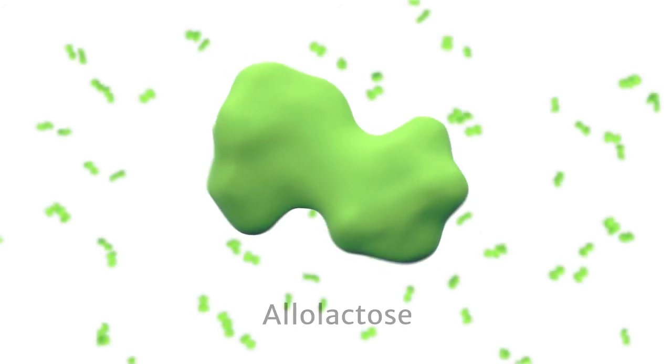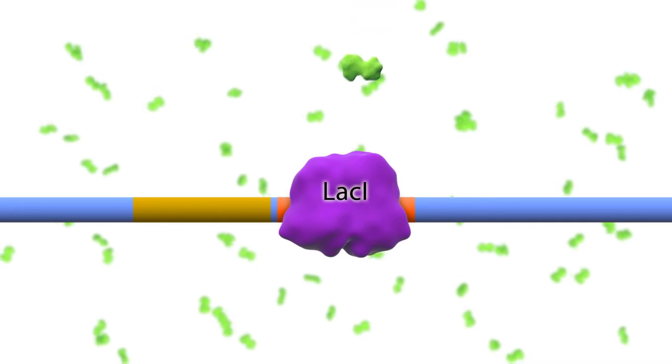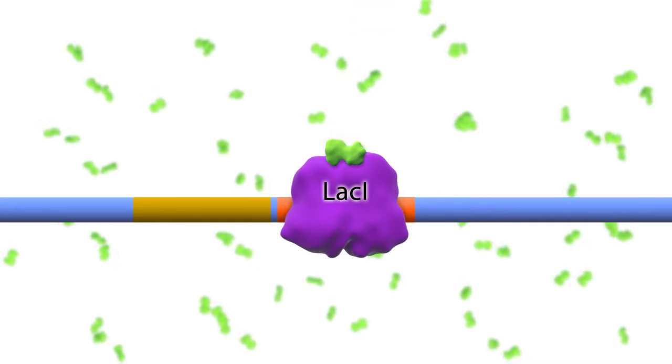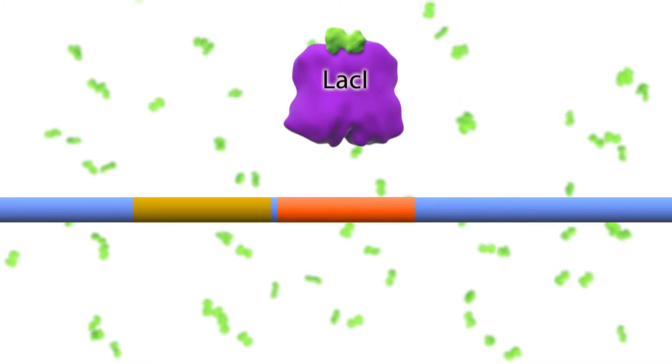When allolactose is present, it causes a conformational change in the lac I protein. As a result of this conformational change, the lac I protein detaches from the lac operator sequence.